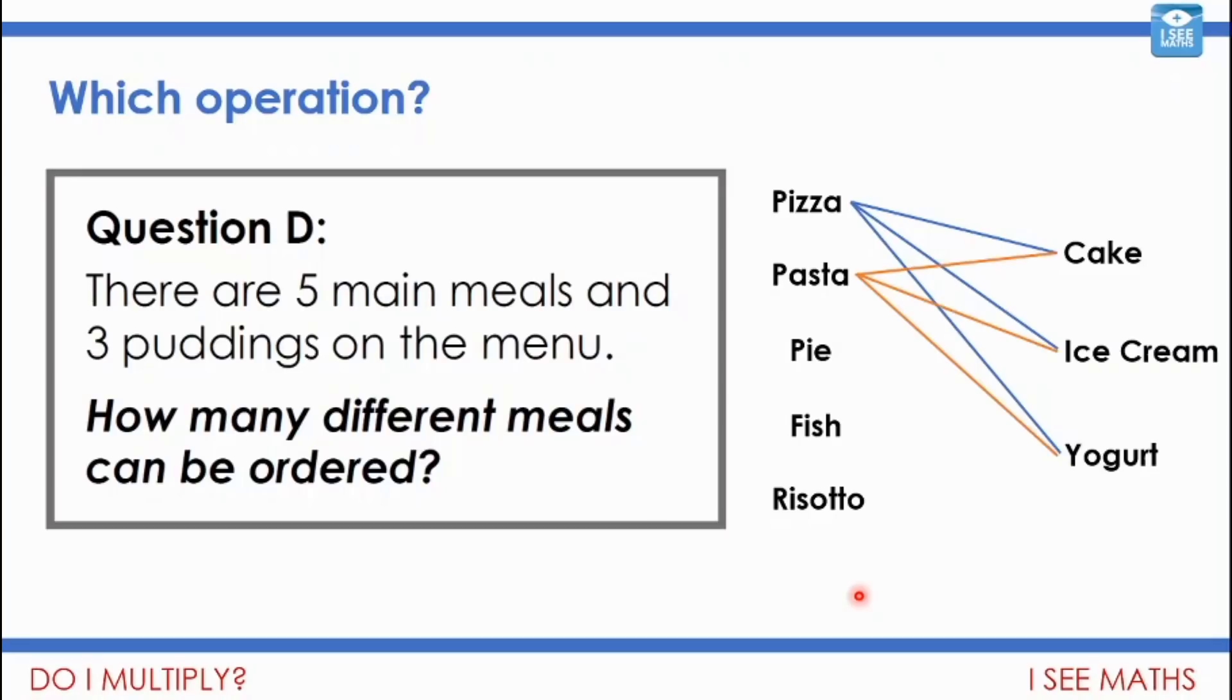Though if you went for the pasta, then of course there's three puddings as well. So for each main meal, there's then three different possible puddings that could be had. So in total, and I'll not ask you to count the lines because it looks a little bit like a spider's web, a colourful one. Well, how many lines will there be? There'll be three lines from each main meal going to each pudding. So in total, 15 lines, or if you like, 15 different possible main meals. We call this one a combinations problem. How many different combinations can there be?